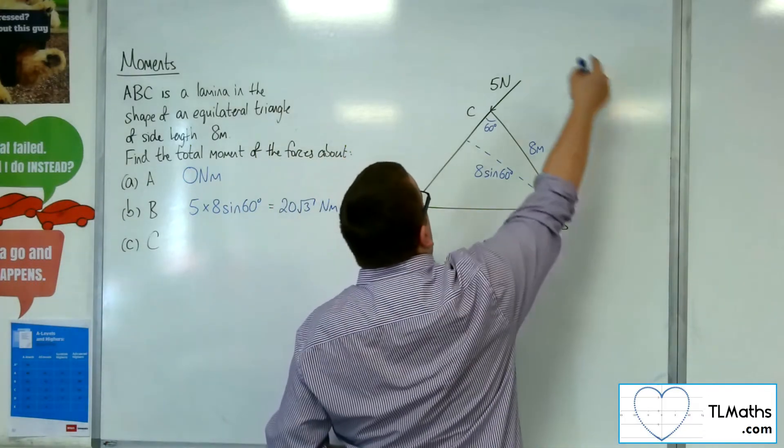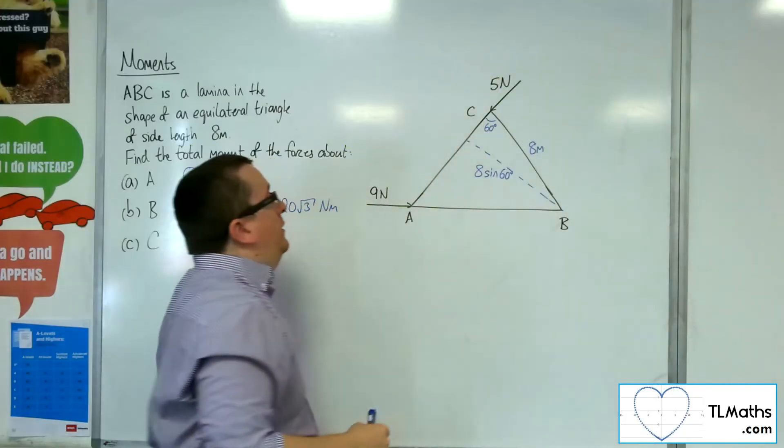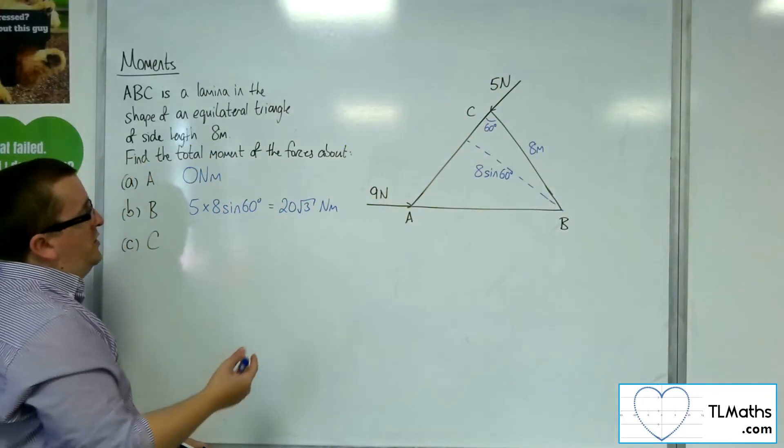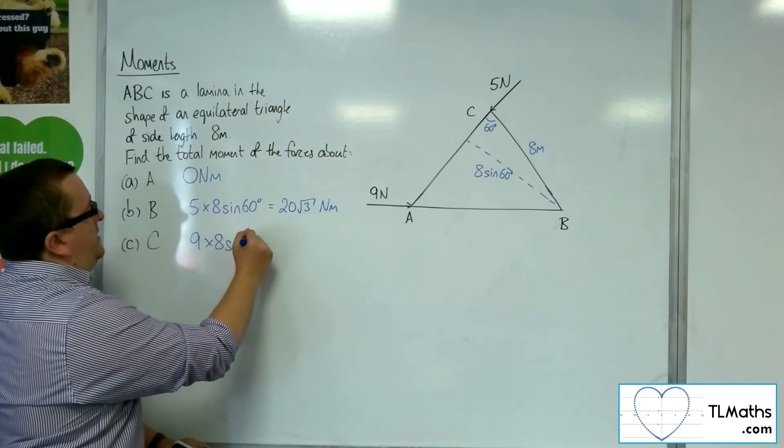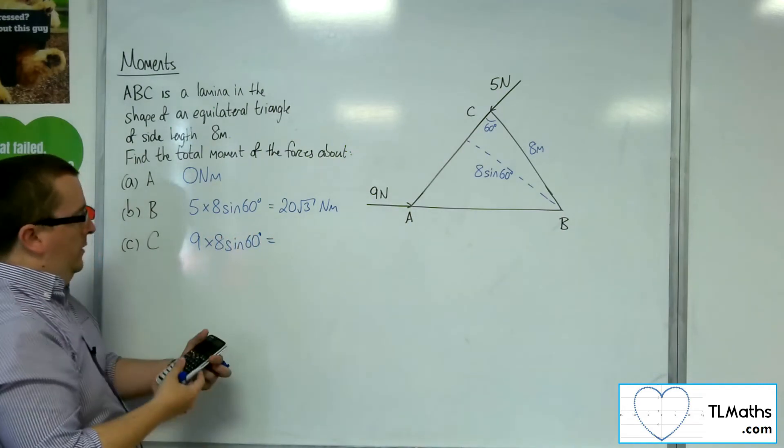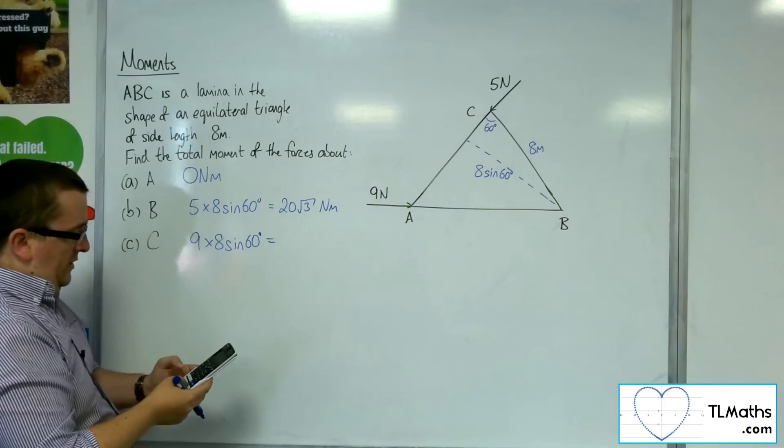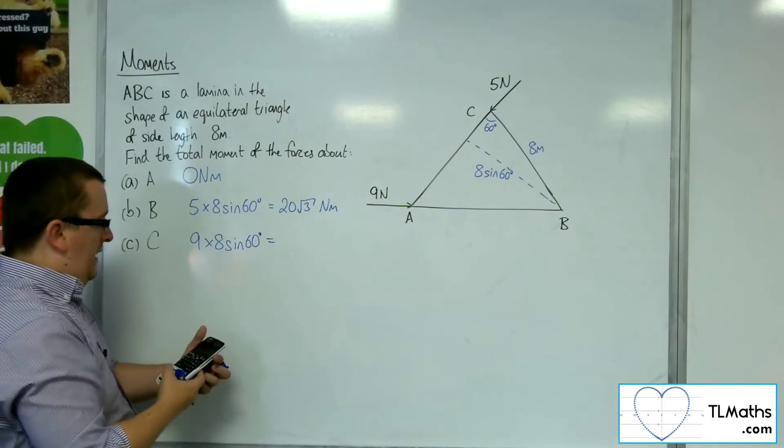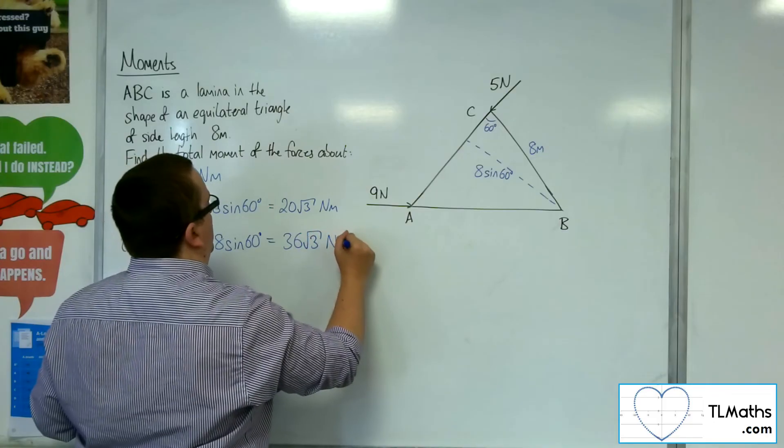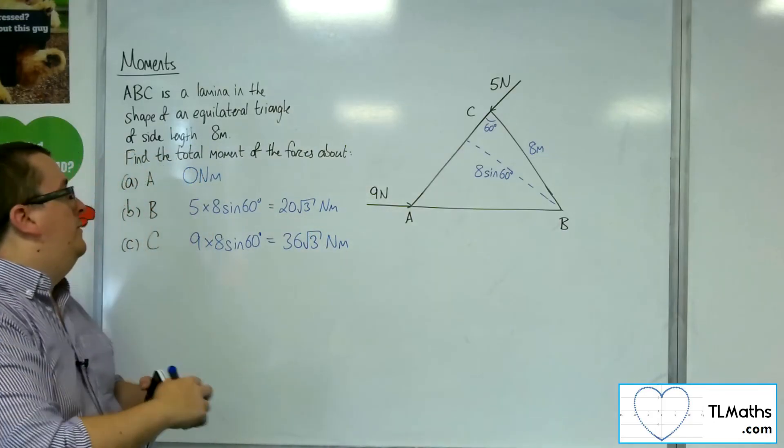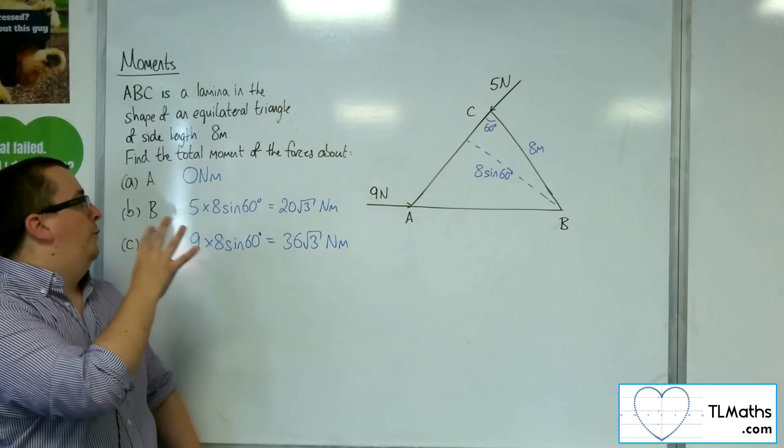Now, pushing through this way, we're going anti-clockwise, so it will be a positive result, but the force is 9 times 8 sine 60 this time. So 9 times 8 times sine 60 is 36 root 3 newton metres. And so they are the answers for A, B and C.